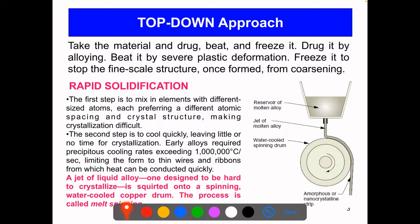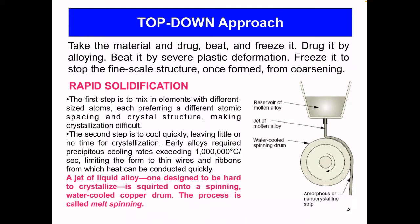In rapid solidification, the first step is to mix in elements with different sized atoms, each preferring a different atomic spacing and crystal structure, making crystallization difficult. You fill your metals into a reservoir and heat it to produce a molten alloy. The second step is to cool quickly, leaving little or no time for crystallization. A rotating drum forms your material as a ribbon, limiting the form to thin wires and ribbons. A jet of liquid alloy is squirted onto a spinning water-cooled copper drum — this process is called melt spinning.